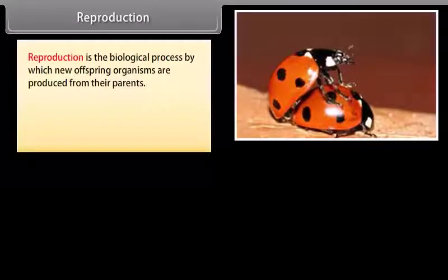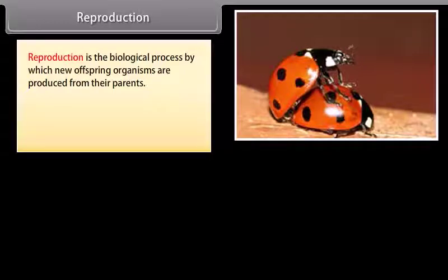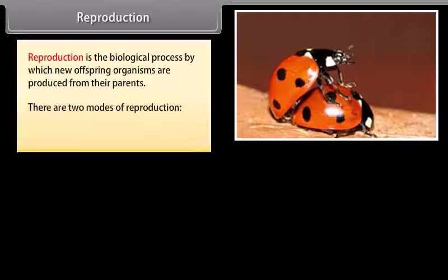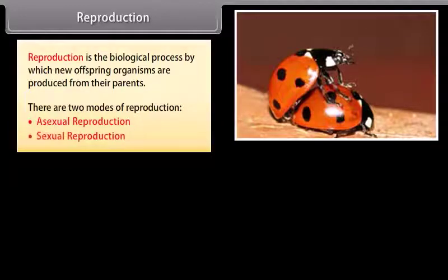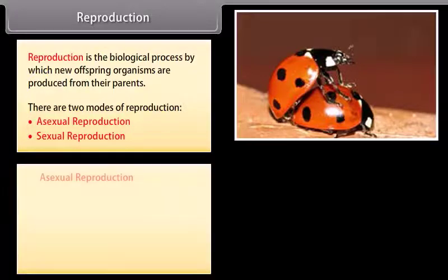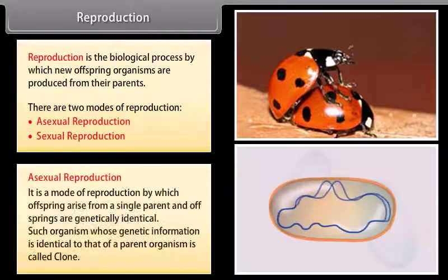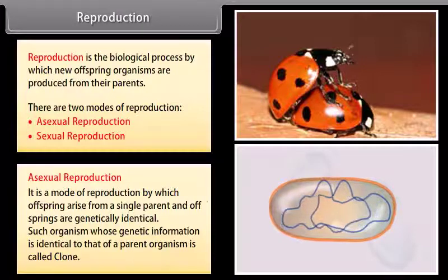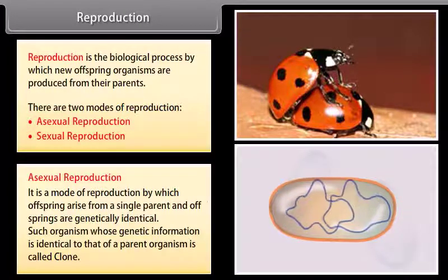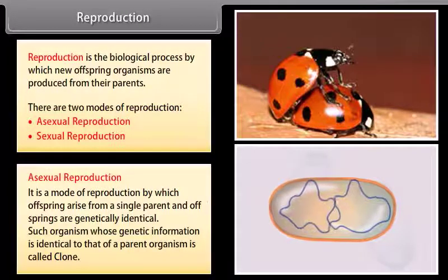Reproduction is the biological process by which new offspring organisms are produced from their parents. There are two modes of reproduction: asexual reproduction and sexual reproduction. Asexual reproduction is the mode of reproduction by which offspring arises from a single parent and offspring are genetically identical.